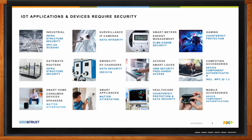In the area of access and smart locks, you need security for ultra-wideband access and all kinds of freehand access. For computing and accessories, you need to authenticate the device components, including qi-charging. For smart home and consumer devices, there is a new standard coming up called MATTER, where the attestation requires a high level of security, same as for smart appliances. In healthcare, you need to secure applications with counterfeit protection. And lastly, mobile accessories, where you need to secure device component authentication.